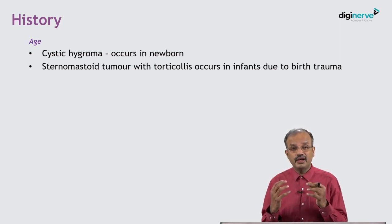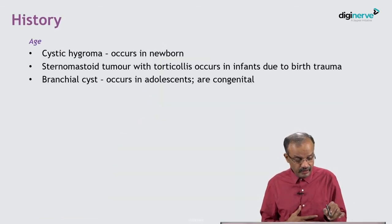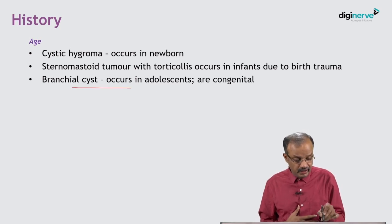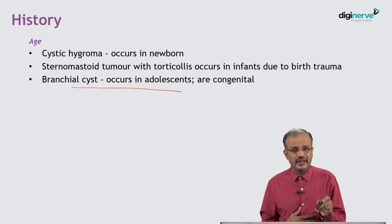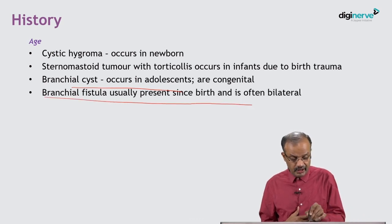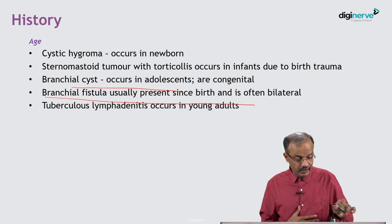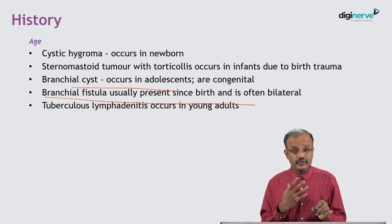A hematoma can occur in the sternocleidomastoid muscle and it will not function properly, especially the sternal head. It undergoes fibrosis, so the child will hold the chin to one side and the neck tilted — the entire half-face development becomes inadequate on that side. This occurs in infants due to birth trauma. Branchial cyst, even though congenital, occurs in adults, usually in the second decade, around age 20–25. Branchial fistula is present since birth as an opening in the lower neck, often bilateral.